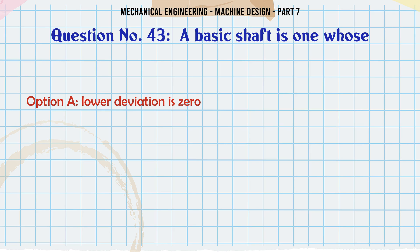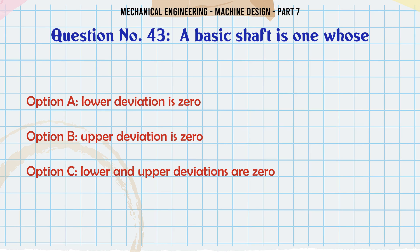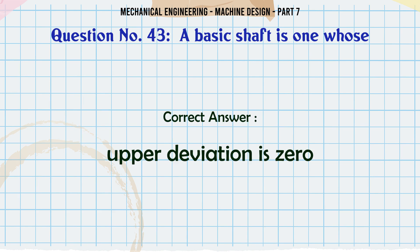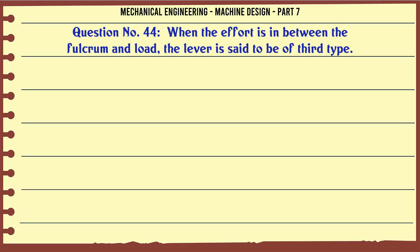A basic shaft is one whose: a) lower deviation is 0, b) upper deviation is 0, c) lower and upper deviations are 0, d) none of these. The correct answer is: upper deviation is 0.